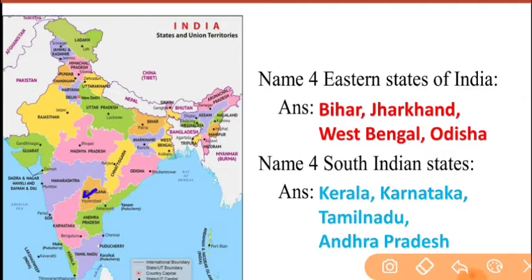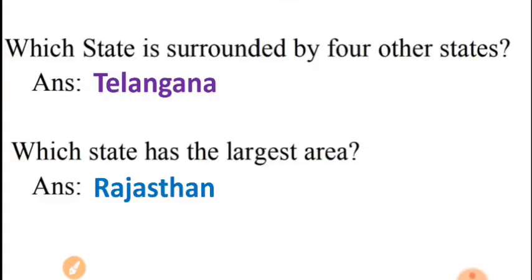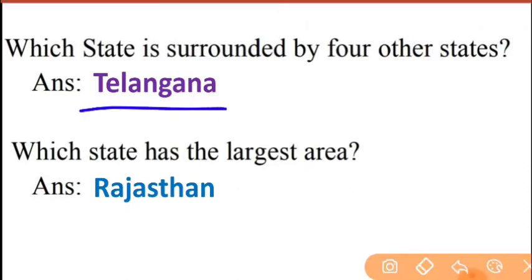You can see Telangana on the map. It is bordered by Maharashtra from the North, Karnataka from the West, Andhra Pradesh from the South and East, and Chhattisgarh from the East. So Telangana is the state surrounded by four other states.